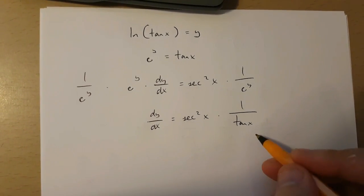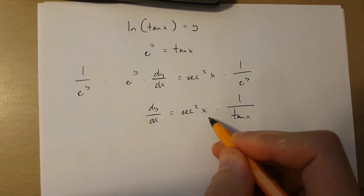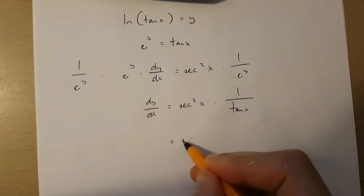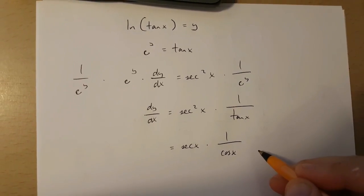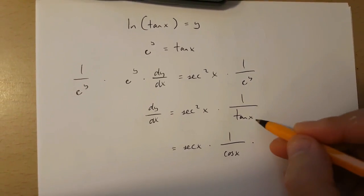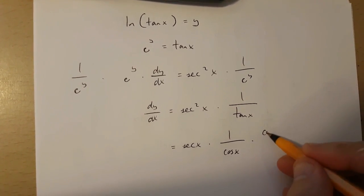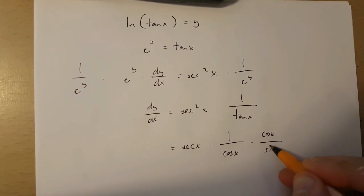Now this can be simplified. Sec x squared is actually sec x times 1 over cos x, and 1 over tan x is in fact cos x over sin x.